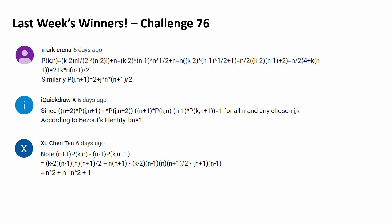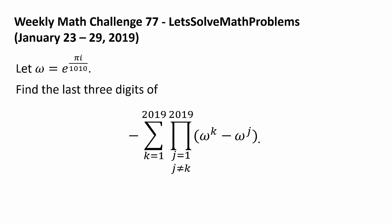Let us proceed to this week's challenge. Let Omega be e^(πi/1010). Find the last three digits of negative of the summation from K equals 1 to 2019 of the product from J equals 1 to 2019 such that J is not equal to K of Omega to the K power minus Omega to the J power.